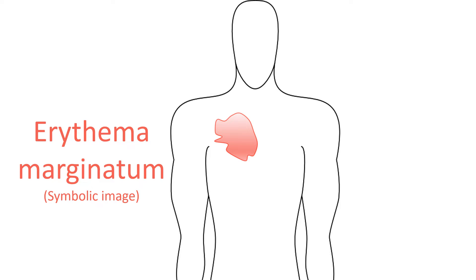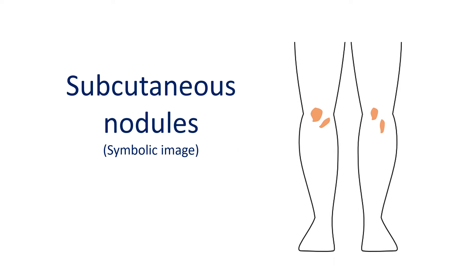Fortunately, polyarthritis and chorea do not occur at the same time, otherwise it would have caused severe pain in the inflamed joints. Chorea is usually a delayed manifestation of rheumatic fever while joint pain is an early manifestation. By that time, polyarthritis would have subsided. Subcutaneous nodules and erythema marginatum do not cause much problem to the child with rheumatic fever as they disappear soon. Polyarthritis also subsides sooner or later.